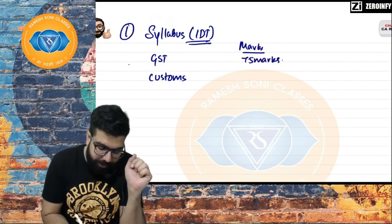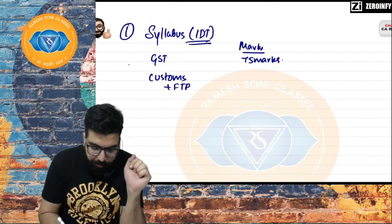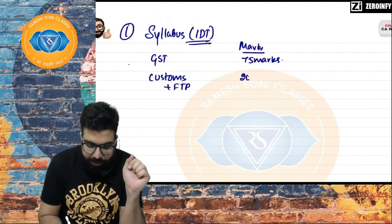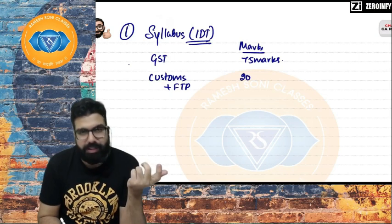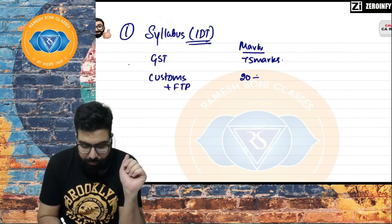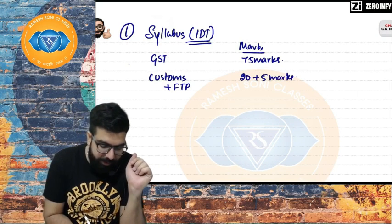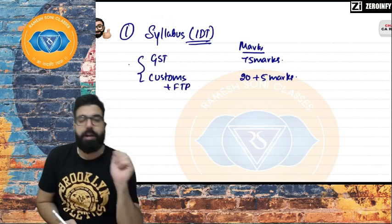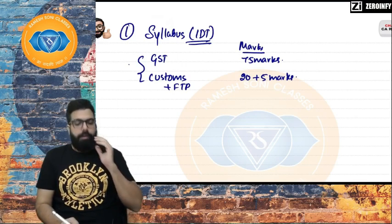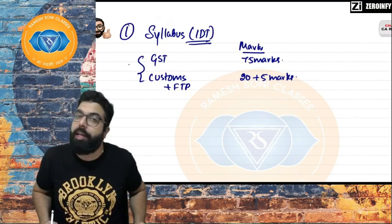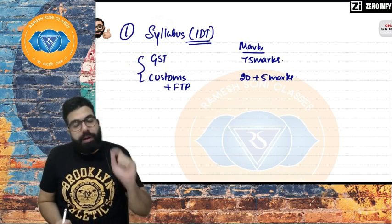Customs and FTP come for 25 marks total — Customs generally comes for 20 marks and FTP comes for 5 marks. We will be covering all three — GST, Customs, and FTP — in our fast track batch.